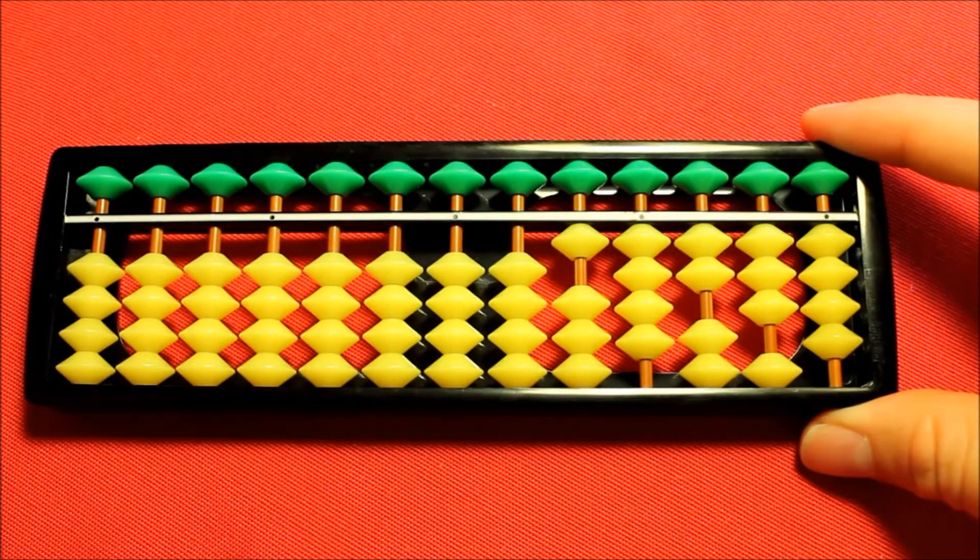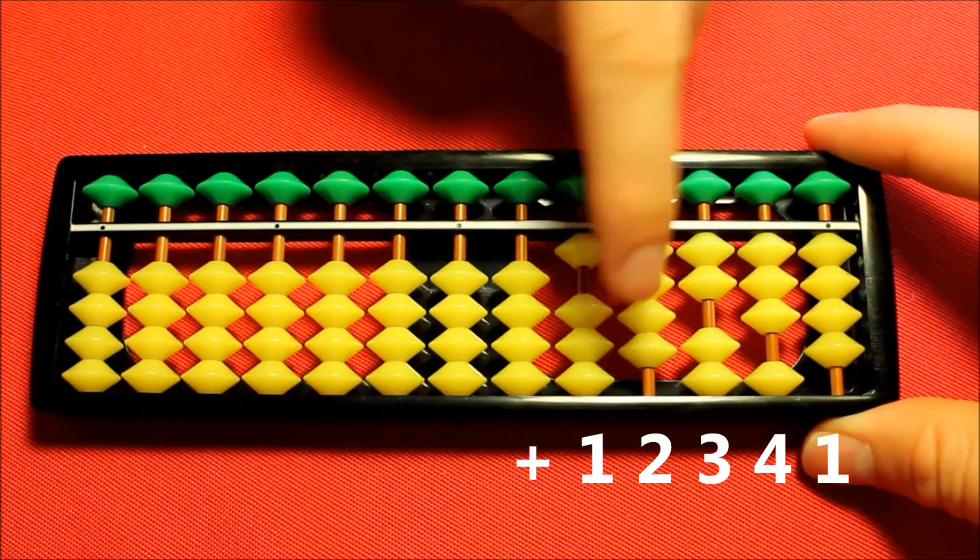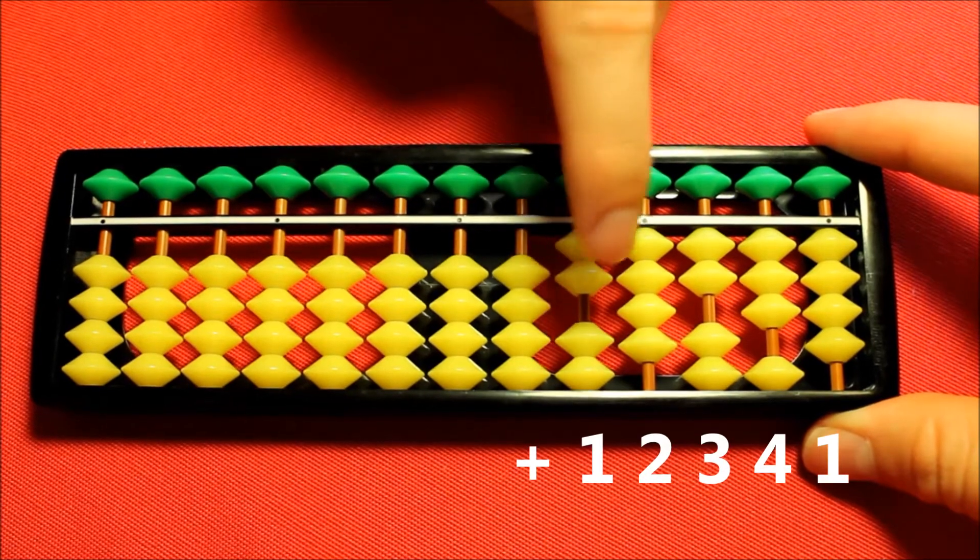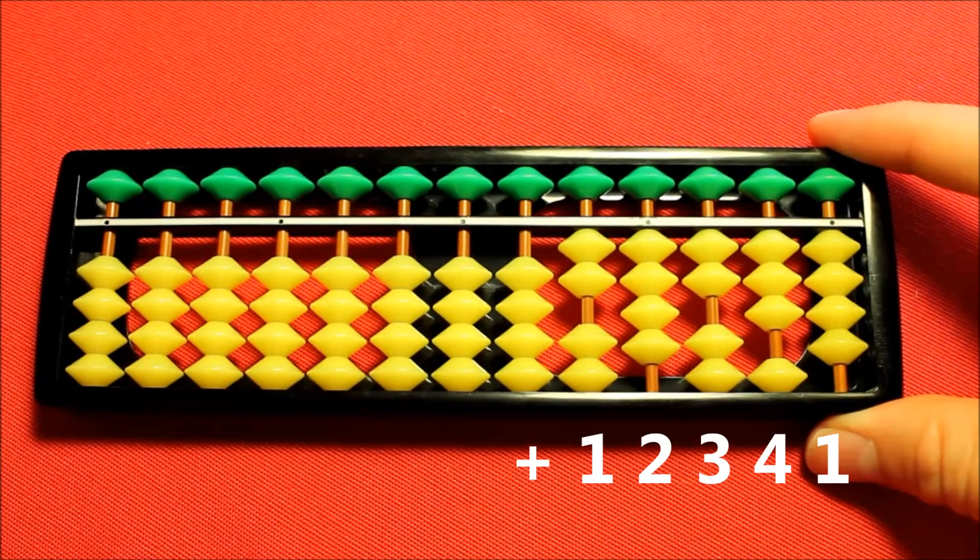And now let's start adding. To the first column I'm going to be adding a one. Nice and easy. Up goes the earthly bead. No need to worry about the heavenly one. There we have it.